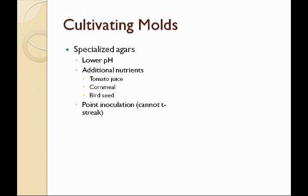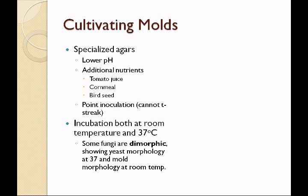We can't T-streak a mold — the spores would go everywhere, so we just touch it down to the agar, which is called a point inoculation. We then incubate at both room temperature and 37 degrees Celsius because some fungi are dimorphic, meaning that at one temperature they will show the yeast morphology (at 37°C) and a mold morphology at room temperature. It's the same fungus — it just has two different morphologies at different temperatures, hence the name dimorphic.